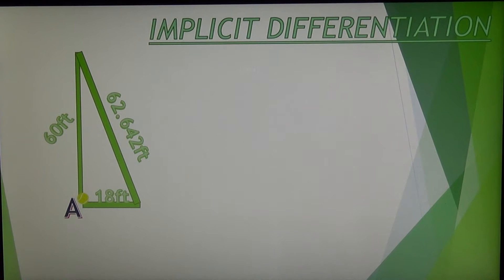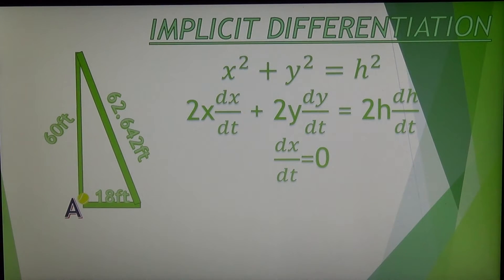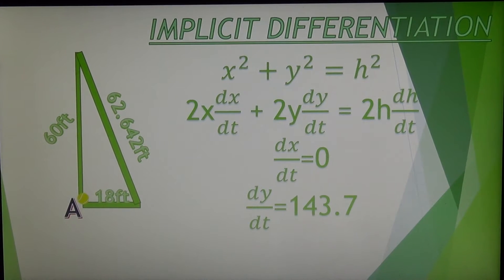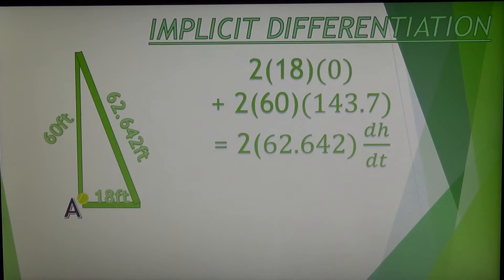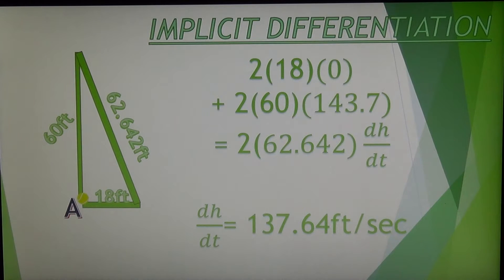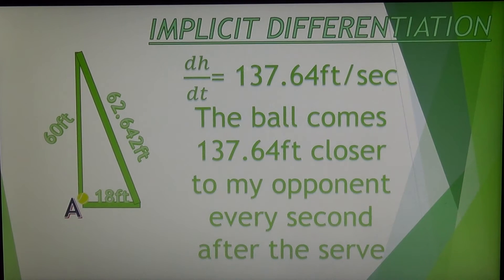Next we will use implicit differentiation of the Pythagorean formula to see the change of the ball's position relative to my opponent every second. We can insert dx/dt as 0 because my distance from the side of the court is constant and will not change during the serve. dy/dt can be inserted as 143.7 feet per second, equivalent to a 98 mph serve. After we insert all of the given information, the only value we do not have is dh/dt, the change in the ball's position every second. So we can solve for dh/dt using basic algebra. After solving, it is known that if I hit a 98 mph serve straight up the line 60 feet away from my opponent, the ball will approach him at a rate of 137.64 feet per second — meaning the ball comes 137.64 feet closer to my opponent every second after the serve.